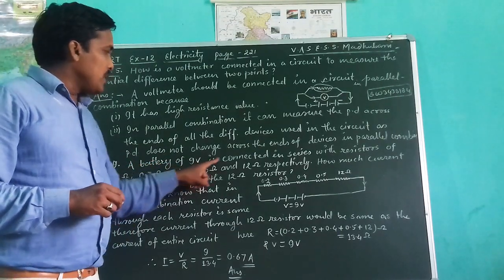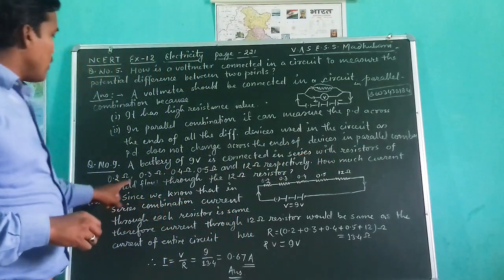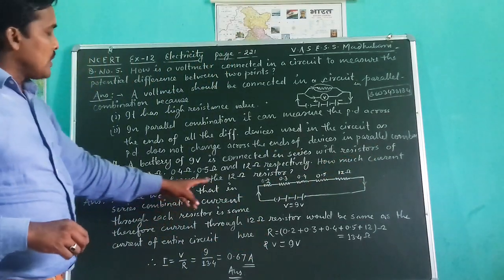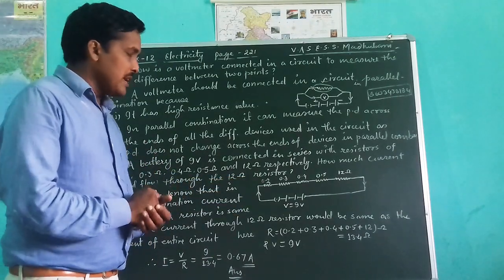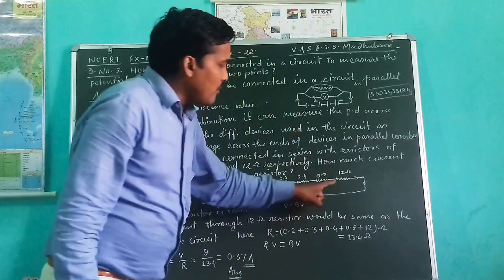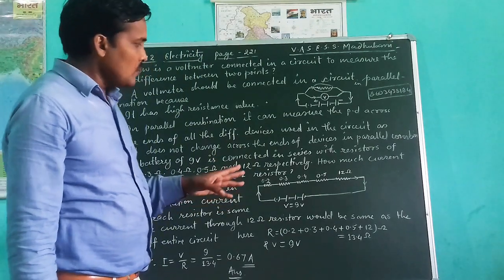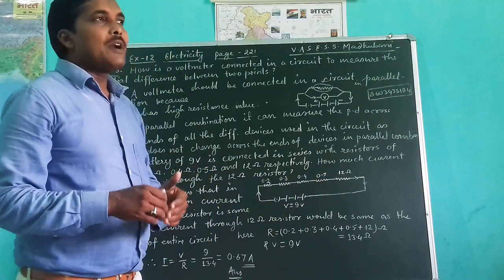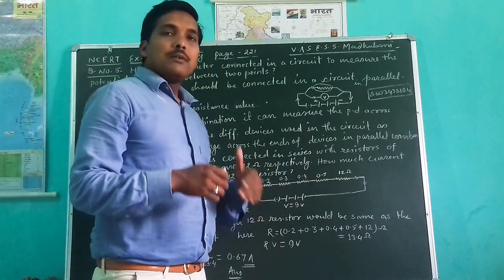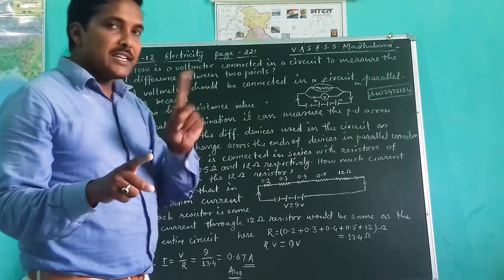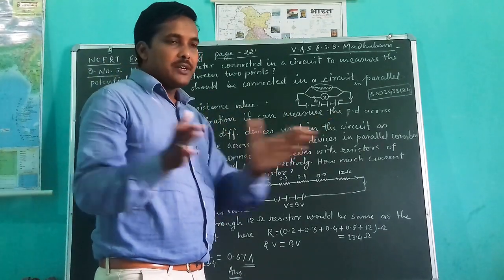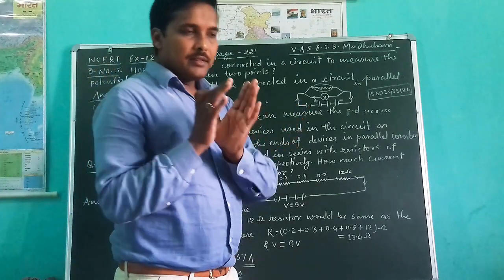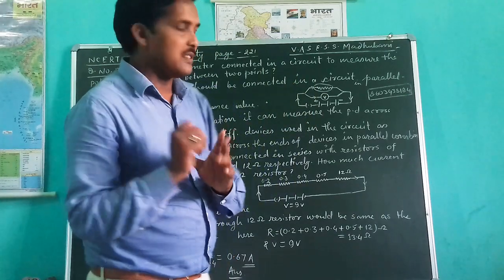A battery of 9 volt is connected in series with a resistor of 0.2 ohm, 0.3 ohm, 0.4 ohm, 0.5 ohm and 12 ohm respectively. How much current would flow through the 12 ohm resistor? Means, what is the magnitude of current that is passing through 12 ohm resistor? You know it very well that in series combination, the entire circuit has the same current. Means the devices, whatever the devices are connected in the circuit must have the same current. Because in series combination, current is not going to be altered. That is not going to be disputed in different channels. But in parallel, the current is divided along the different channels.